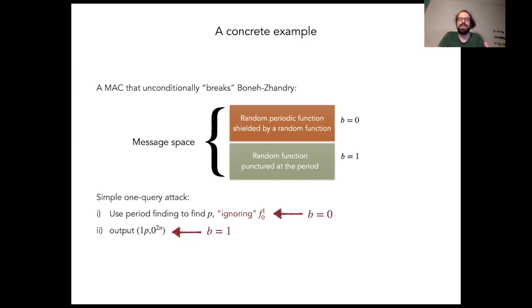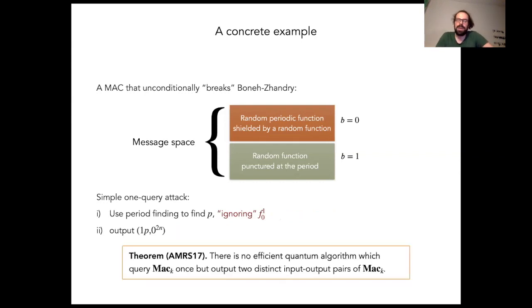This is a convincing forgery because the period finding algorithm uses a uniform superposition over messages that start with zero, while the forgery is on a message that starts with one. In addition, we can prove that there's in fact no efficient quantum algorithm that wins the Boneh-Zhandry security game for this MAC.